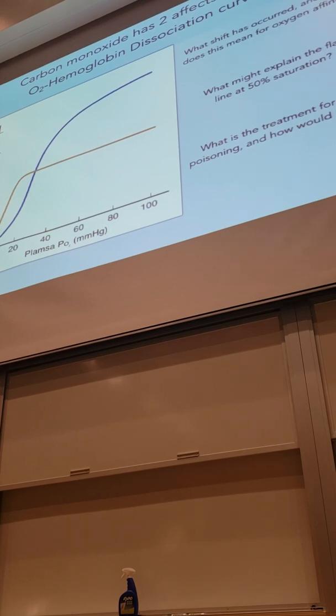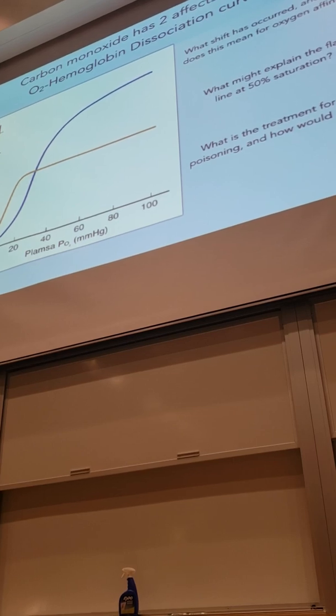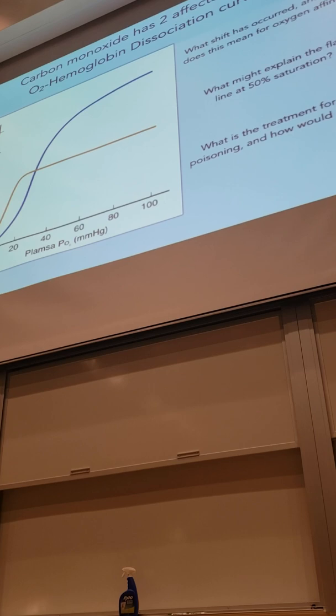We have saturation maxing out at 50%, so you can only carry 50% as much oxygen. The plasma is not really carrying much. And then the left shift here makes it so that the oxygen is having a harder time getting off of hemoglobin as it's passing through systemic capillaries.